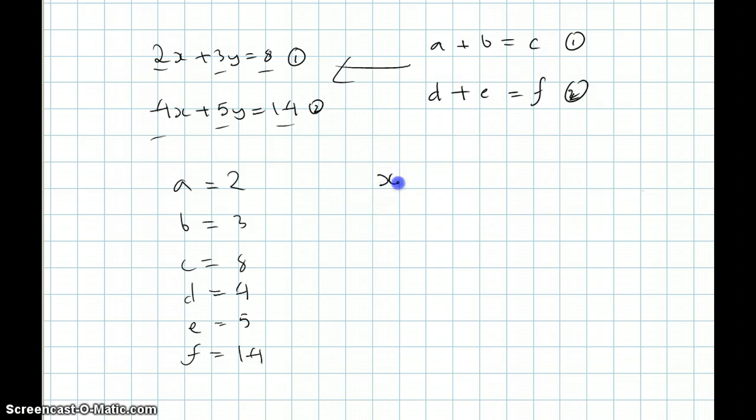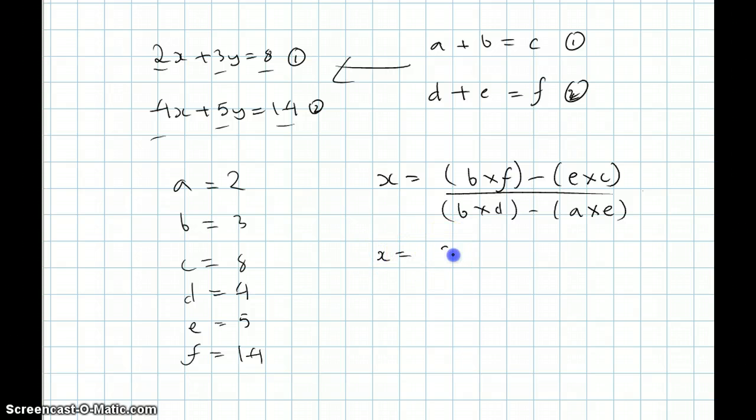Now in Vedic Maths, to find the x value, we would do something like this: b times f minus e times c over b times d minus a times e. So we can just substitute that in. So 3 times 14 minus 5 times 8 over 3 times 4 minus 5 times 2. That would give us 42 minus 40 is 2, 12 minus 10 is 2, so x is equal to 1.